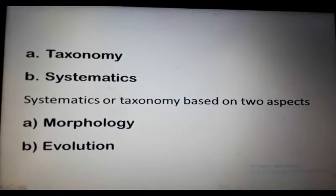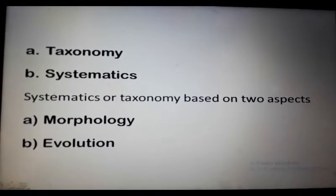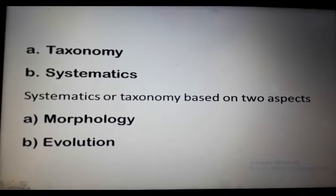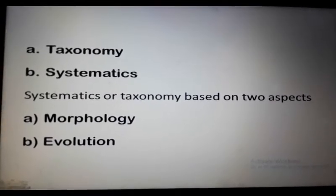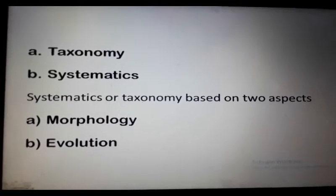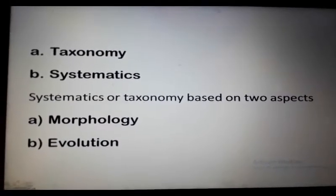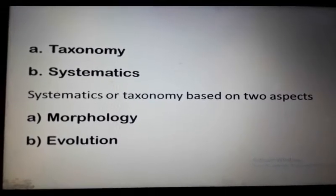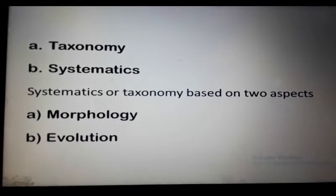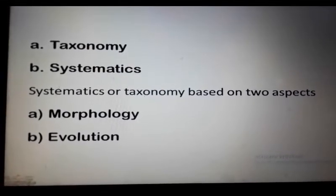The members of the same taxonomic group are more closely related to each other than to members of different taxa. This is the concept of morphology and evolution upon which systematics and taxonomy are based.